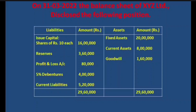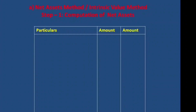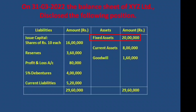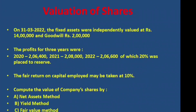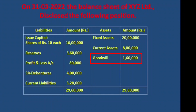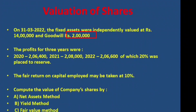We include all assets. Note that the profit and loss account is a fictitious asset, so we exclude it. Fixed assets are independently valued at 14 lakhs — not the book value of 20 lakhs. Goodwill is revalued at 2,00,000 — not the book figure of 1,60,000. Current assets remain at 8,00,000.